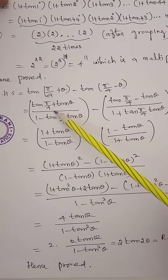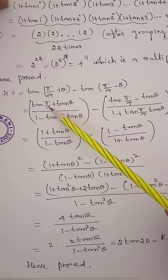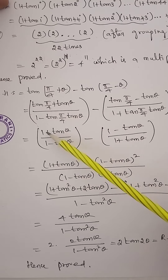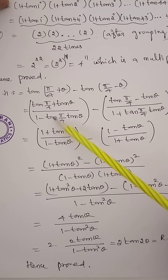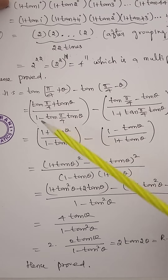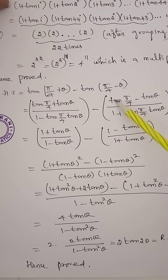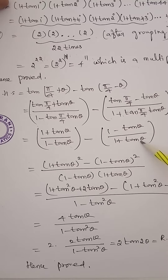π/4 equals 180/4, which is 45 degrees, and tan 45 equals 1. So the first fraction becomes (1 + tan θ) / (1 − tan θ), and minus of the second fraction is (1 − tan θ) / (1 + tan θ).